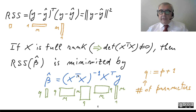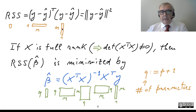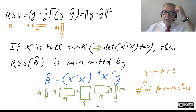The final step is rewriting in matrix form the cost function. The residual sum of squares can be rewritten as (Y minus Y-hat) transpose times (Y minus Y-hat). Recall that Y is a column vector, so we have a row vector times a column vector, which gives a scalar — this is just the squared norm of Y minus Y-hat. At this point, we are ready to obtain the solution.